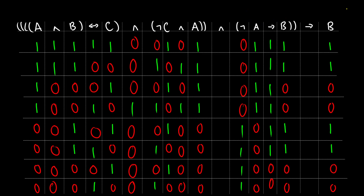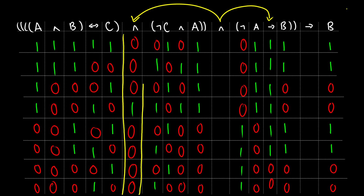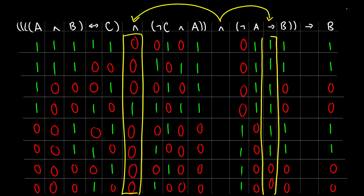Now we can do the and that takes our first two premises and not A arrow B and compares the two. This is true when both of them are true. In rows one, two, and three, A and B if and only of C and not C and A are false, so those first three rows will be false. Fourth row: one and one, that's going to be true. Then in rows five through eight we have zero and one, zero and one, zero and zero, zero and zero — so those will all be false.